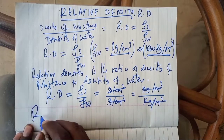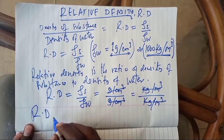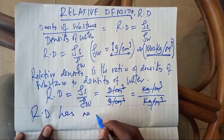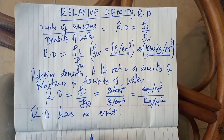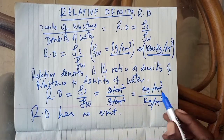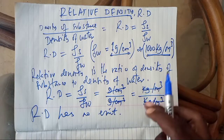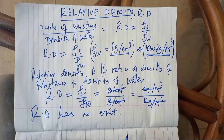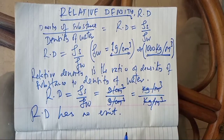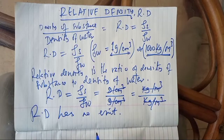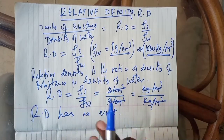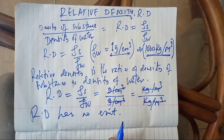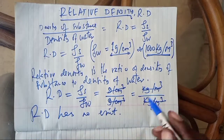The relative density has no unit. Why is it so? Because it is the ratio of two densities which are written in the same unit. So whenever you are determining the relative density, you will not find a unit. The reason is that this is the ratio of two densities, so the units cancel out.